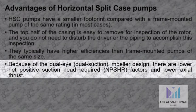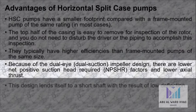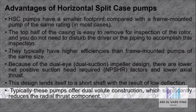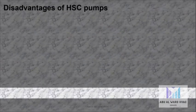Because of the dual suction impeller design, there are lower NPSHr factors and lower axial thrust. This design lends itself to a short shaft, resulting in low deflection. Typically these pumps also offer dual volute construction, which significantly reduces the radial thrust component.